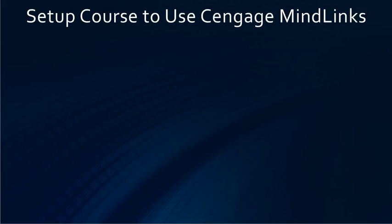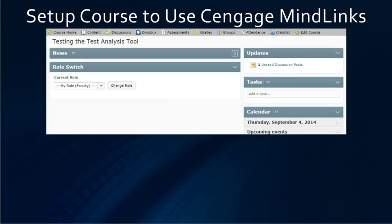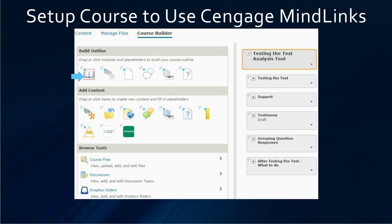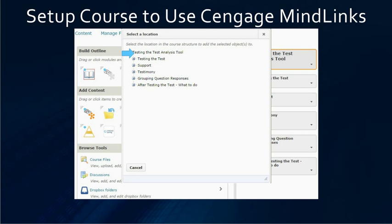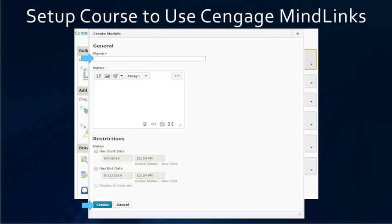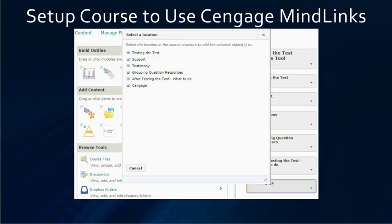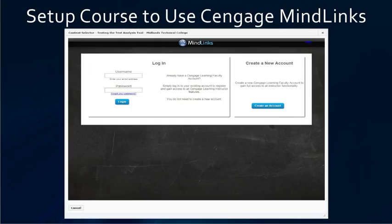Next we are going to talk about setting up your course for Cengage MindLinks. For this one, you do not need the homepages because we don't need the Pearson widget — Cengage doesn't use a widget. We just go to edit course and then the course builder. If you don't have it, you have to create a placeholder, tell it where to go, give it a name, and create it. This time we are going to click on the Cengage icon and tell it we want it in our Cengage module.